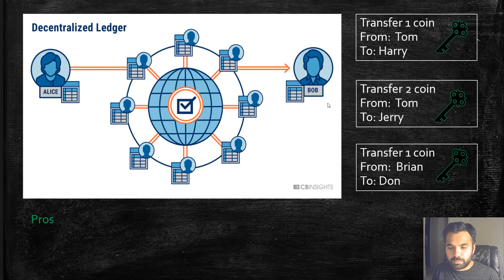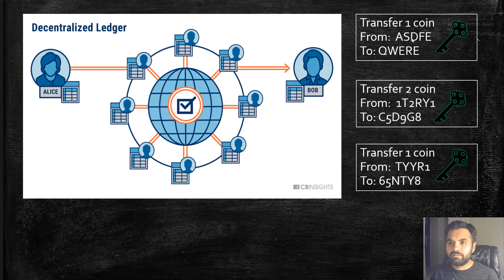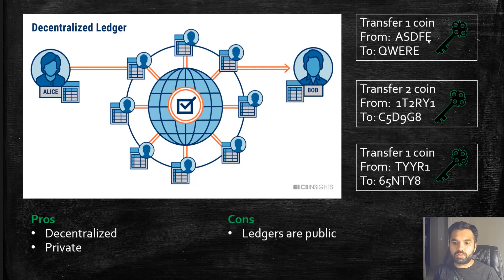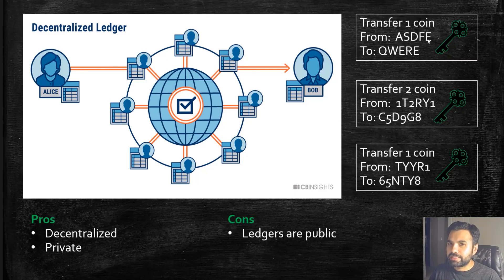You might be thinking: if the names appear on the blocks, doesn't that defeat the purpose of privacy and anonymity? In the real world, it does not show the actual names of the people involved in the transaction — it stays private. Instead of names, it will have your wallet address, which is a very long string that you cannot guess. Now, the threats: these ledgers are public. Even though you are not exposing your name, someone can still figure out how many transactions have been made from a particular address and where the money went.